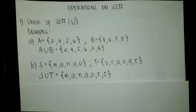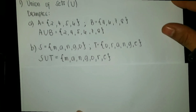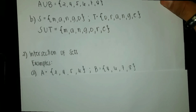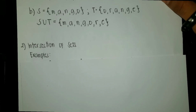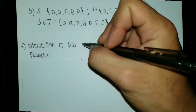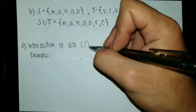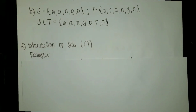The second operation on set is the intersection of sets. Intersection of sets contains all the elements that are common on the given sets. The intersection of sets can be denoted by this symbol — it looks like an inverted U.